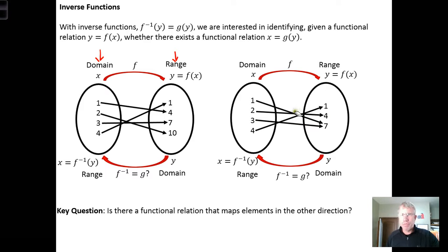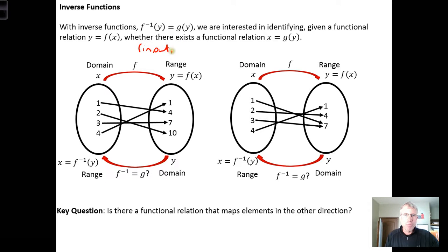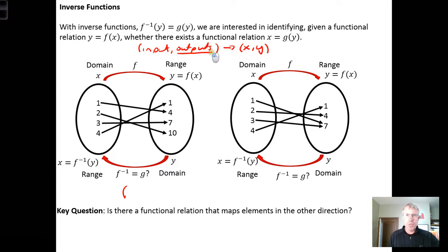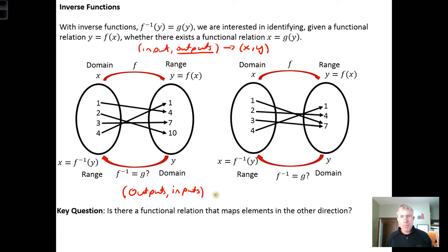In mathematics we're frequently interested in whether there is a functional relation that maps the other direction — that takes the range of a function and maps it back to the domain. We're accustomed to a function having inputs followed by outputs, or in other words we input X and output Y. What we're interested in is whether there is a function that takes the outputs and then outputs the original inputs.